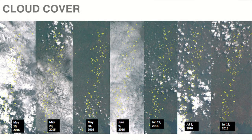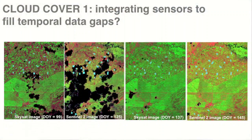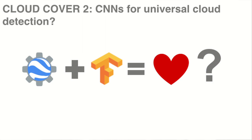The second challenge is cloud cover, which I'm sure you're all familiar with. The main issue is whether or not we are able to do effective data fusion using other sensors. Another aspect we're working on is whether we can create a universal cloud detector using CNNs with Earth Engine and TensorFlow combined.